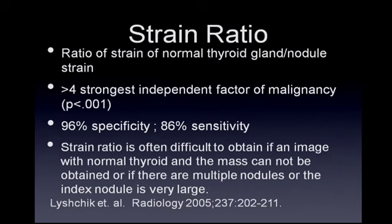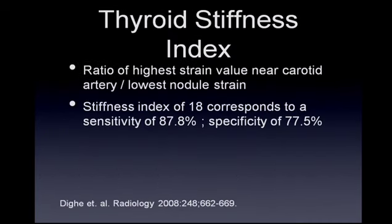Letchik found a 96% specificity and 86% sensitivity using the strain ratio. One problem with this technique is the strain ratio is often difficult to obtain if there are so many nodules or the index nodule is so large that it's very hard to get both the nodule and normal thyroid tissue in the same field of view. A third technique by Dengi, the thyroid stiffness index, uses the ratio of the highest strain value near the carotid artery divided by the lowest nodule strain, finding that a stiffness index of 18 corresponded to a sensitivity of approximately 88% and a specificity of 77.5%.